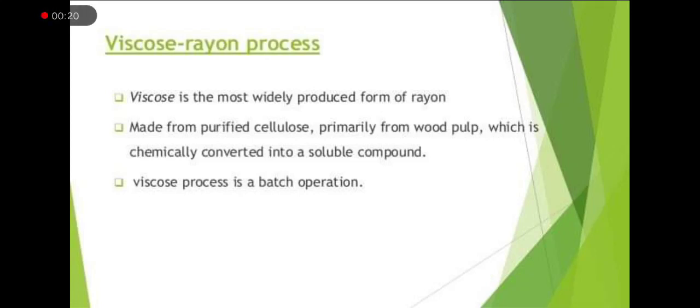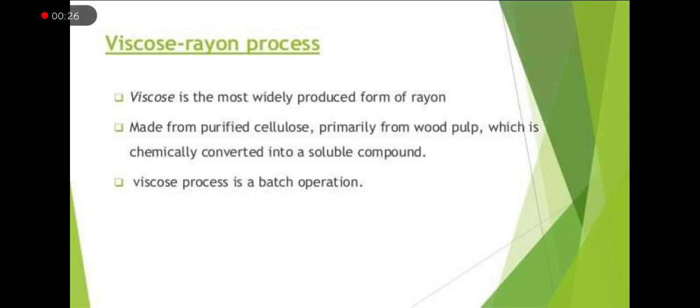The viscose rayon process is a batch operation. The cellulose is sourced from purified wood pulp and is chemically converted into a soluble compound before processing begins.